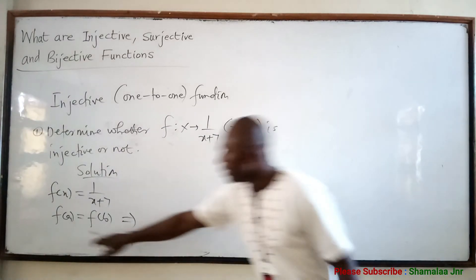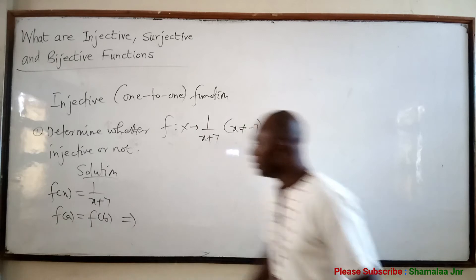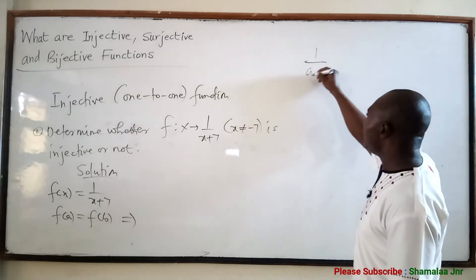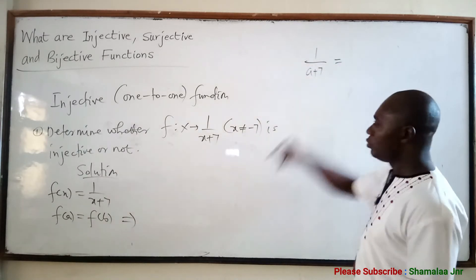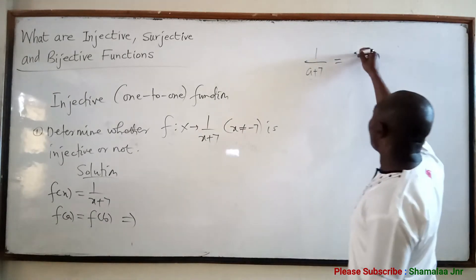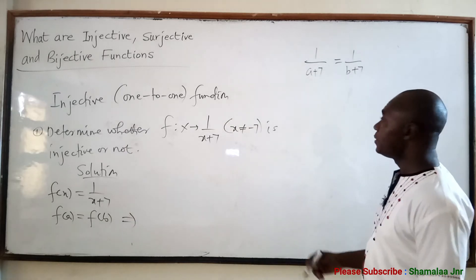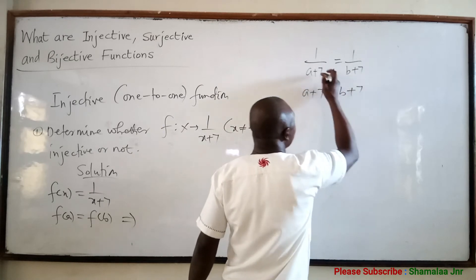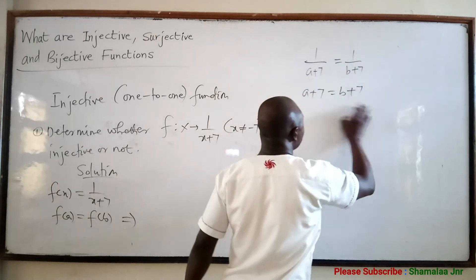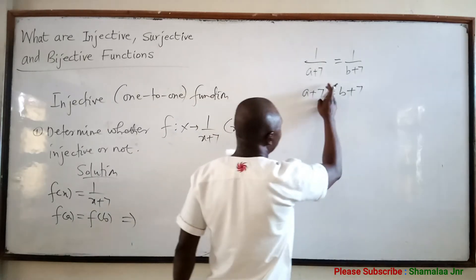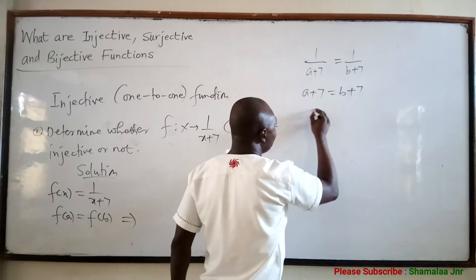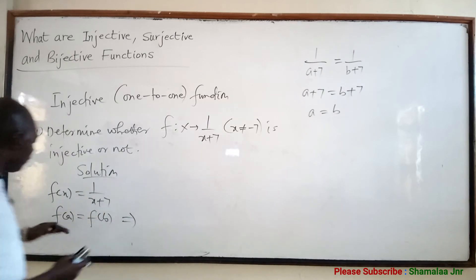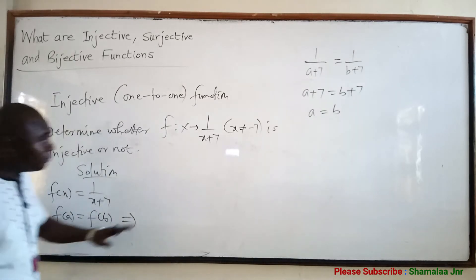F(A) means wherever you see X, write A. So this becomes 1/(A+7). And F(B) means wherever you see X, write B, giving 1/(B+7). This is the same as A+7 = B+7. You invert both sides. Now 7 will cancel 7, and so A = B.